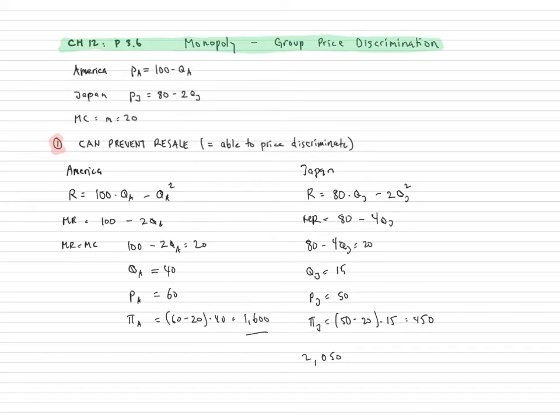The total profit made in both countries for this monopoly is going to be 2,050. I'm just going to add it up, the profits made in each of the two countries. All right, so that's if they can prevent resale. Next, I'm going to see what happens if they cannot prevent resale.